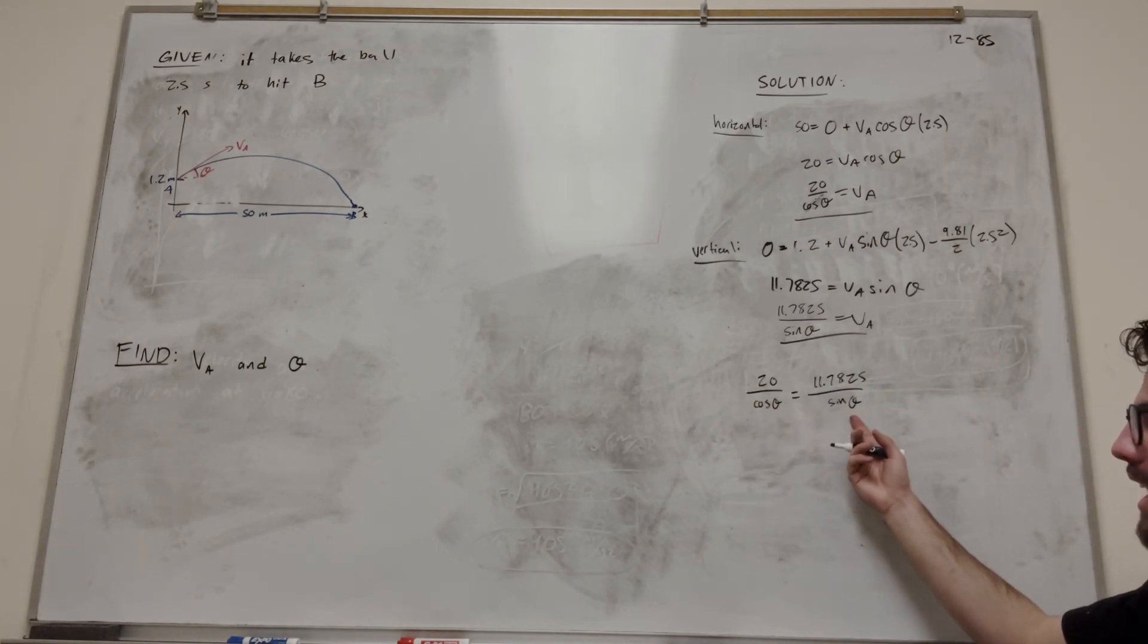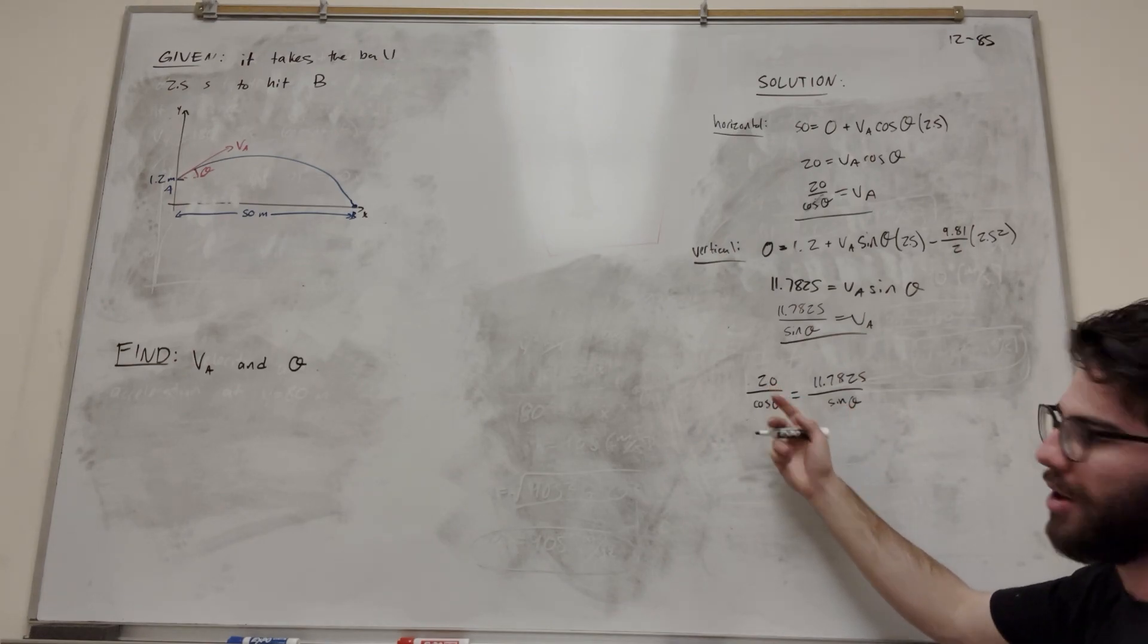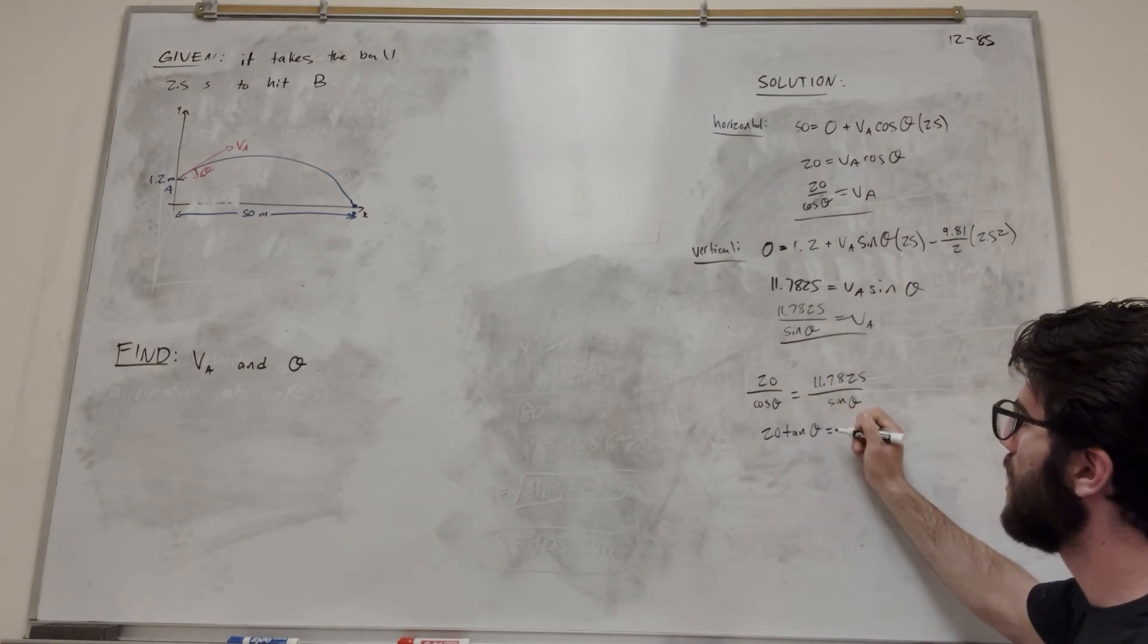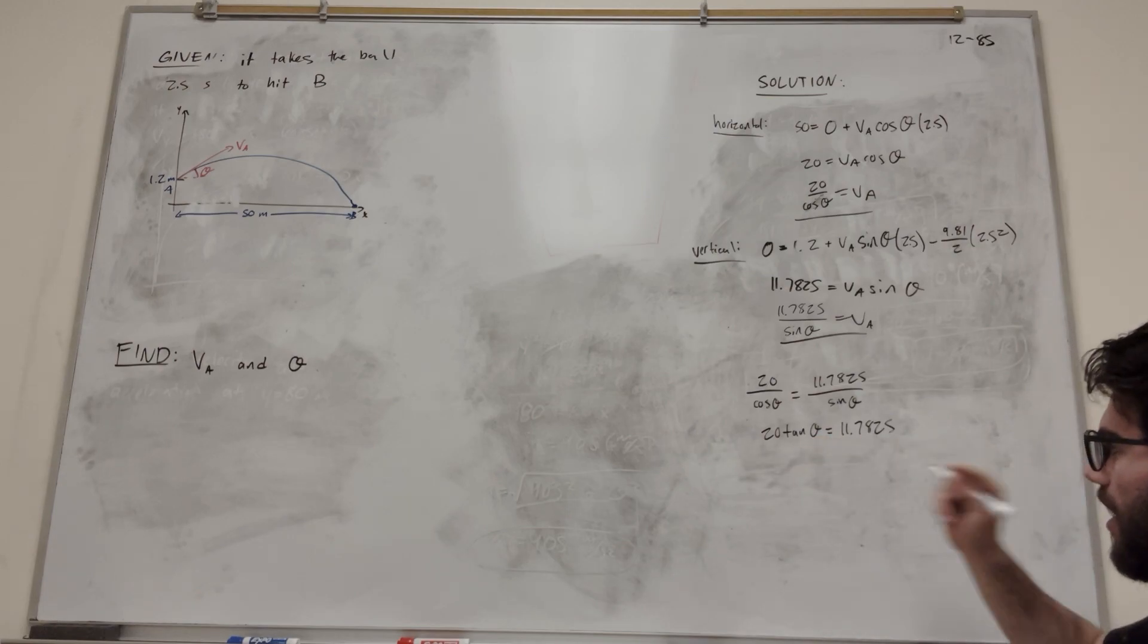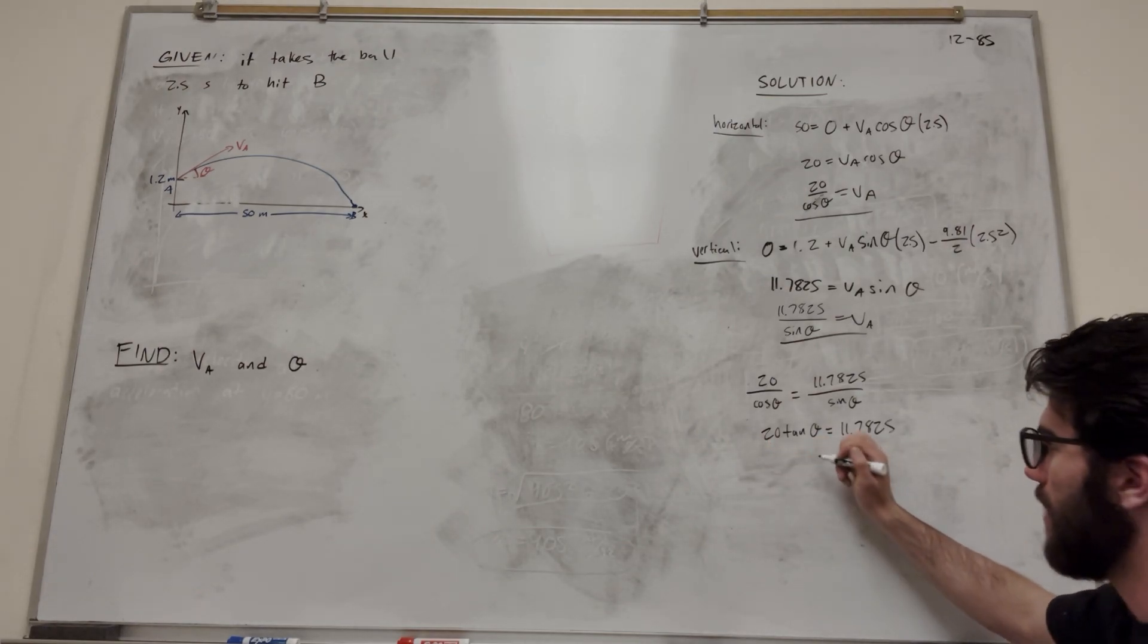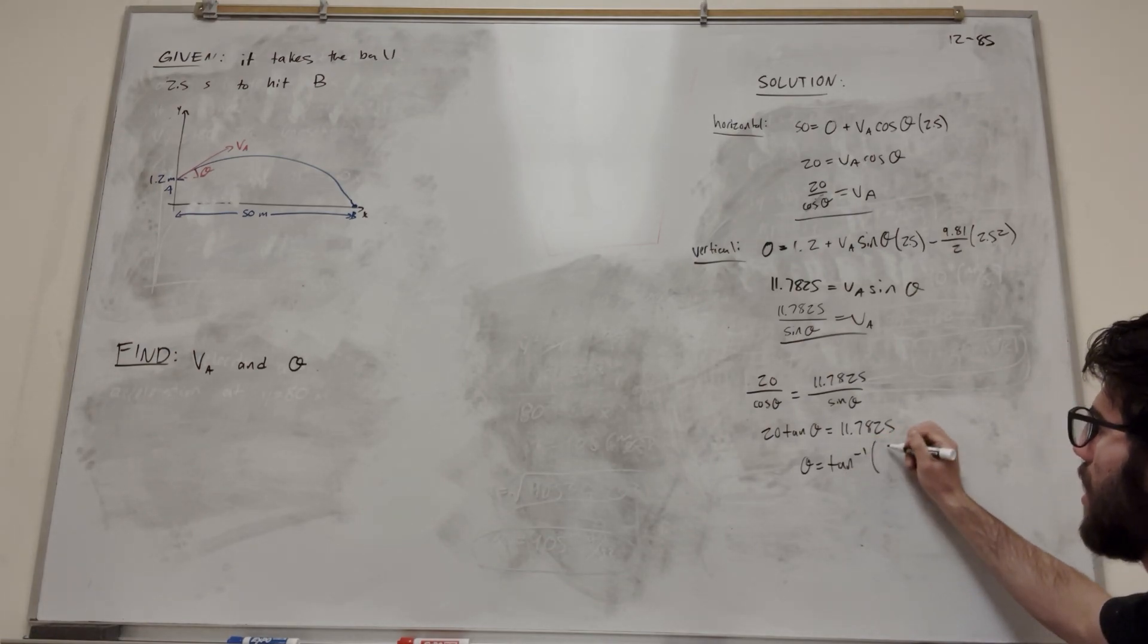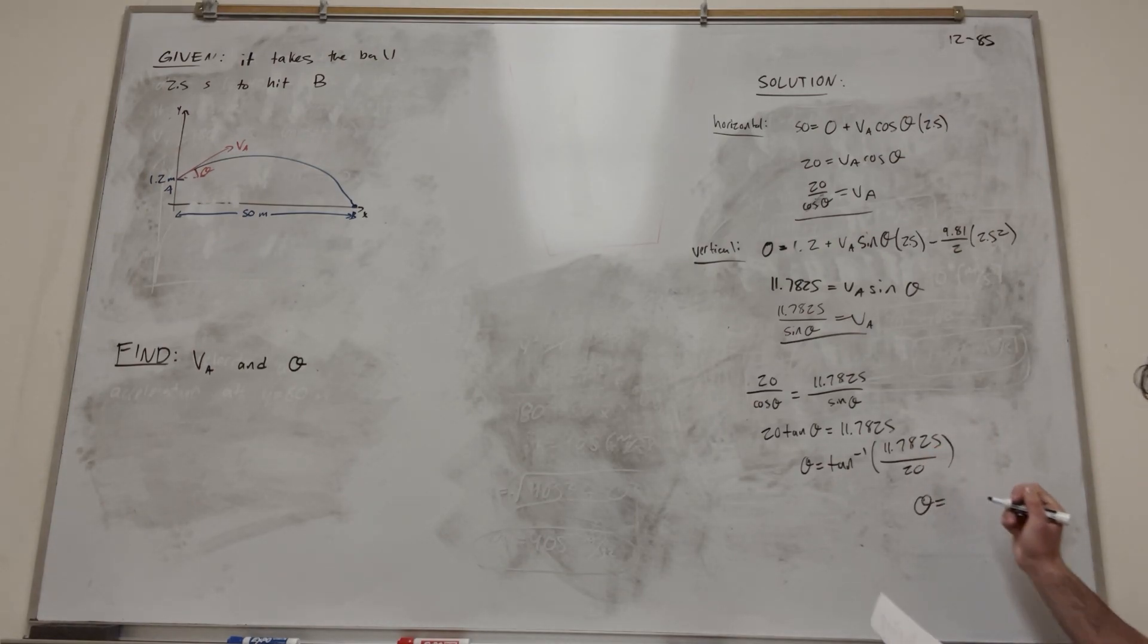So now we can combine the sine and cosine of theta by making a tangent. So let's multiply it by sine. And then we're going to be left with tangent of theta. So it'll be 20 tangent of theta is equal to 11.7825. So then, again, we're going to divide by 20. And then let's take the inverse tangent right here in one move. So it'll be inverse tangent of 11.7825 over 20. Plug this into your calculator. You're going to get a theta value of 30.5 degrees.